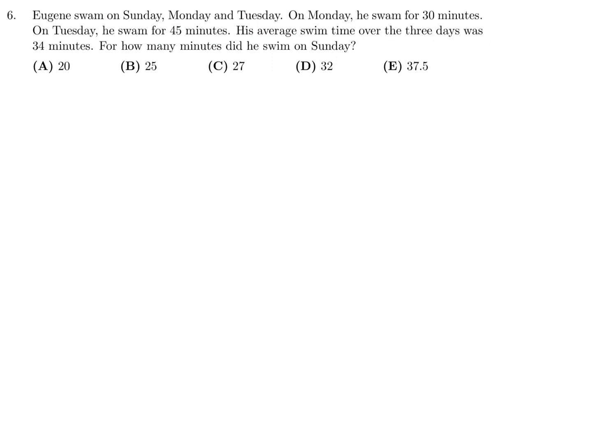Eugene swam on Sunday, Monday, and Tuesday. On Monday, he swam for 30 minutes. On Tuesday, he swam for 45 minutes. His average swim time over the 3 days was 34 minutes. For how many minutes did he swim on Sunday?